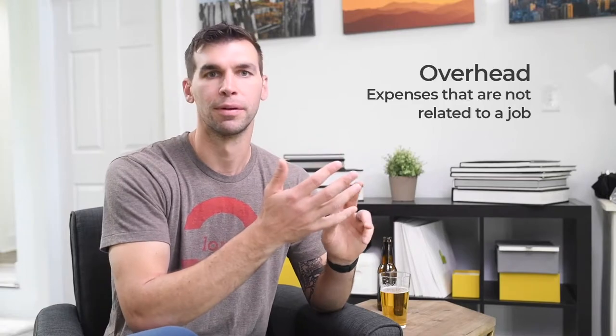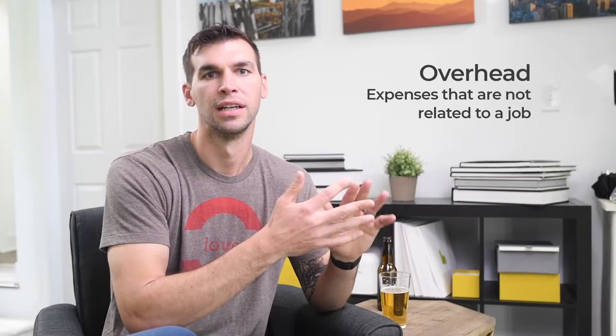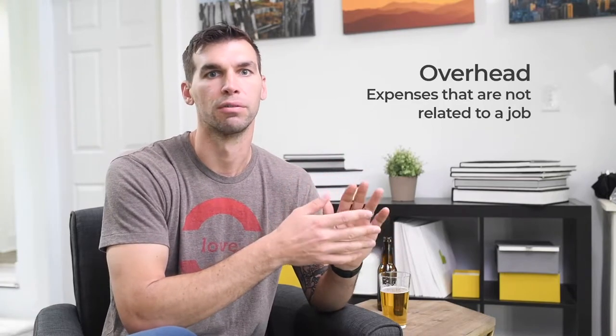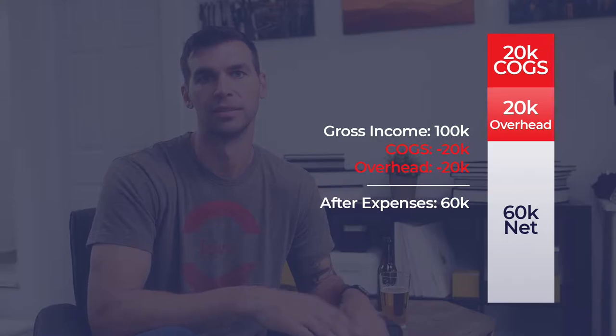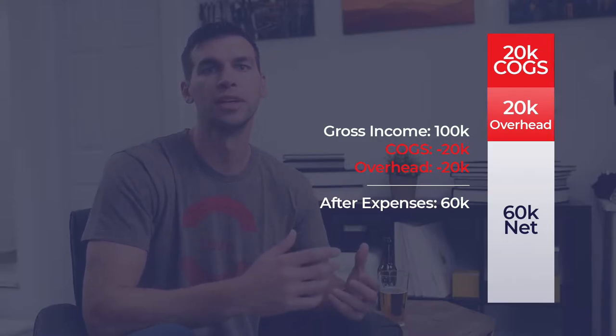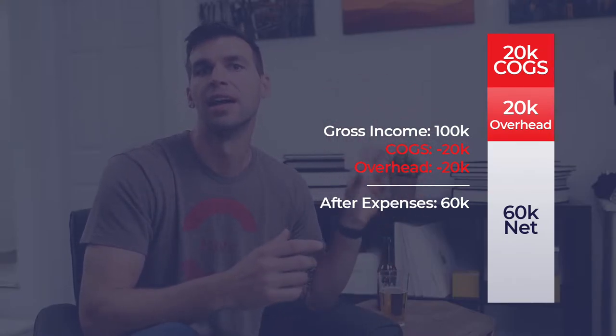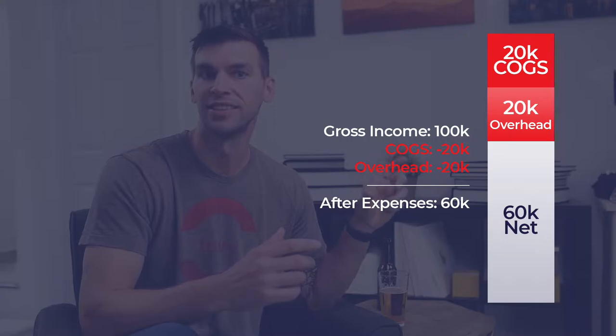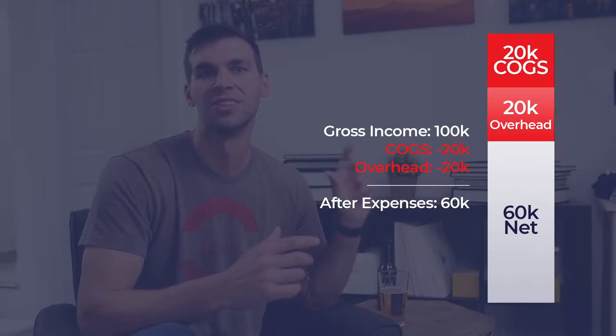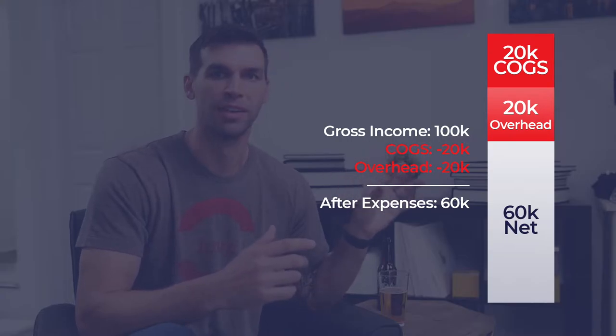Overhead is anything from equipment to subscriptions, accounting, or rent. So let's say for the sake of this example that we have another $20,000 in overhead expenses. As we look, we see that now all of our expenses are accounted for and we have $60,000 left. So that's profit. Except that it's not.